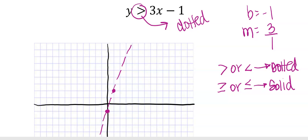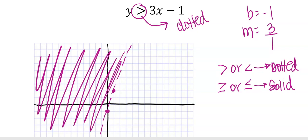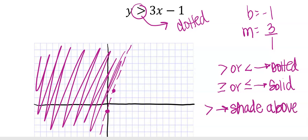When it says greater than, that means above the line. So above the line would be all the points above it, which in this case would be this side. You don't have to get every square inch shaded — just do a little bit. Greater than, shade above. If that's going to mess you up, you can pick a point on one side and check it to see if it works or doesn't.